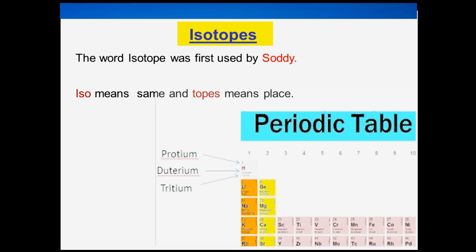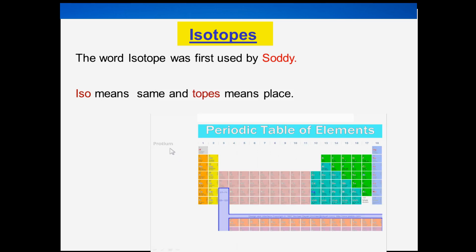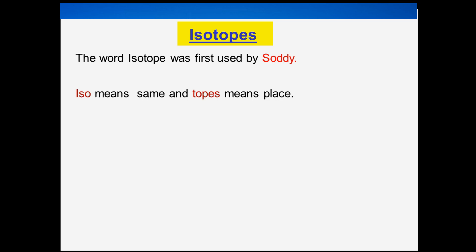For example, there are three isotopes of hydrogen: protium, deuterium, and tritium. All these have the same place—period number one and group number one.